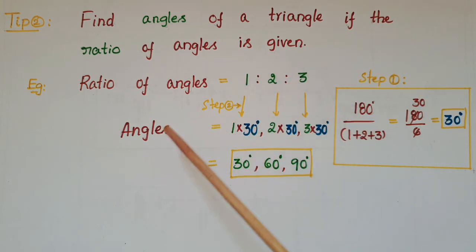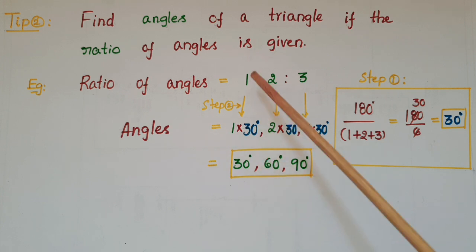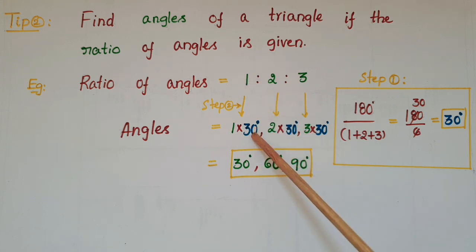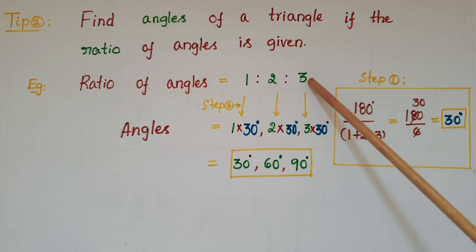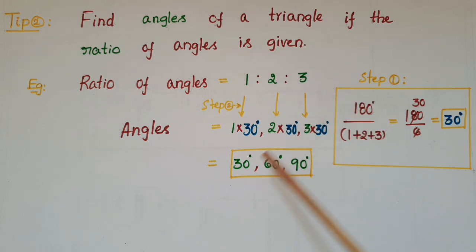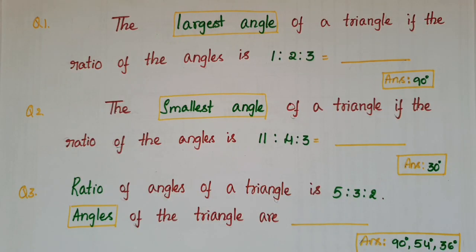You have to multiply this 30 degrees with each of the ratio numbers to get the angles. So the angles are 1 into 30 degrees, 2 into 30 degrees, and 3 into 30 degrees, giving us 30 degrees, 60 degrees, and 90 degrees. Using the same tips, please do this exercise.